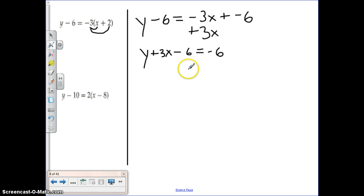Well, I need to make sure that my y and my x are my only two values on this side, so the last thing I need to do, add 6 to both sides, and I will have y plus 3x is equal to 0.